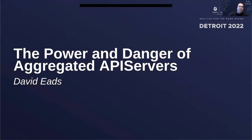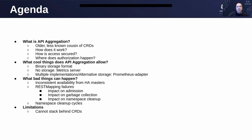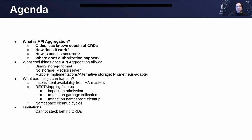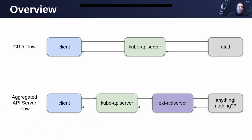Let's talk about the power and dangers of aggregated API servers. We'll start with what API aggregation is and how it works, then cover what features you can build using it, and then discuss the risks and limitations. In a CRD flow, the client sends a request to the Kubernetes API server, which handles it locally before writing to etcd and returning a result. In an aggregated API server flow, the client speaks to the Kubernetes API server as normal, but the API server proxies the traffic to an external API server, which takes over, handles the request — potentially storing it in etcd or elsewhere or nowhere — and returns the result.